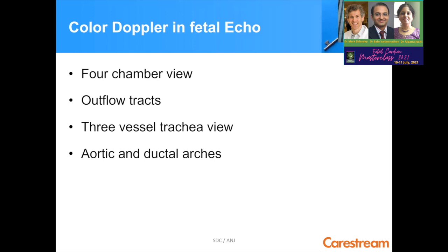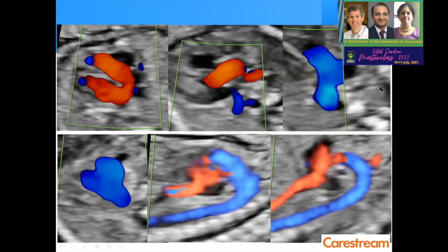When you use color Doppler in fetal echo, the approach is the same as black-and-white imaging: four-chamber view, outflow tracts, three-vessel trachea view, and demonstration of the aortic and ductal arches. You will see the two inflows, the LVOT, the RVOT, and the three-vessel trachea view. The SVC color will be in red in the opposite direction. When your velocity scale is a little high for other cardiac structures, the SVC will not pick up color — you will have to lower your PRF. This is the ductal arch — the wider arc — and this is the aortic arch.